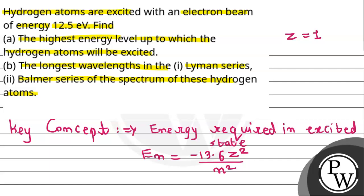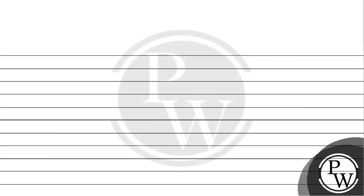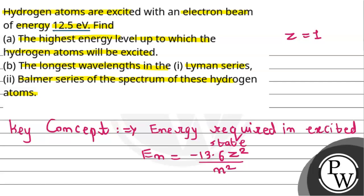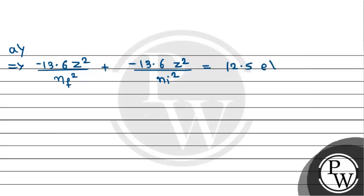As per the A part, we just need to calculate the highest energy level. So for final state energy: minus 13.6 Z squared divided by n_f whole square, plus the initial state energy minus 13.6 Z squared divided by n_i whole square. And this is given equal to 12.5 electron volts. The initial state is obviously ground state, that means n equals 1.